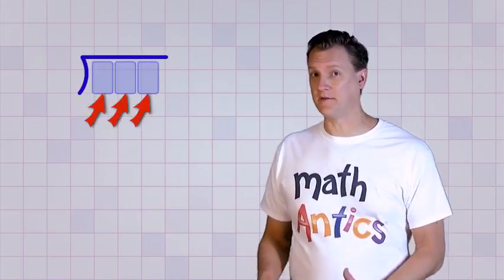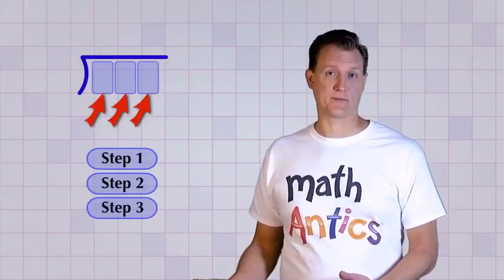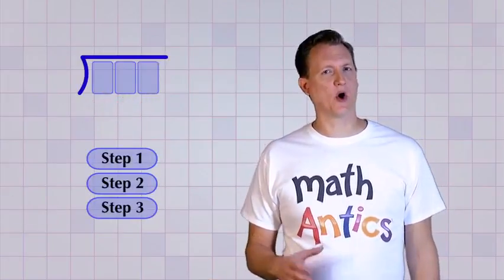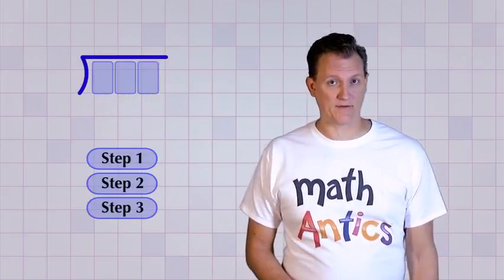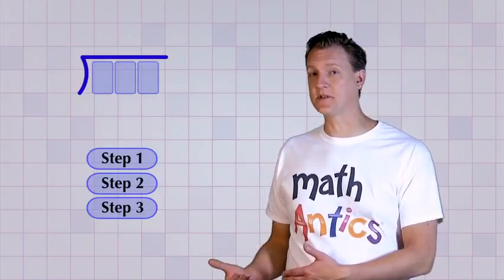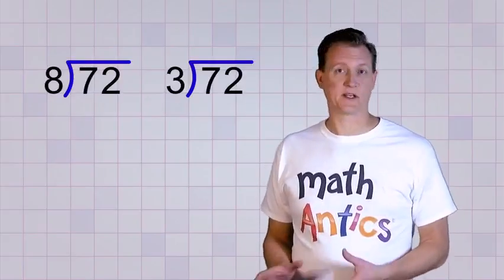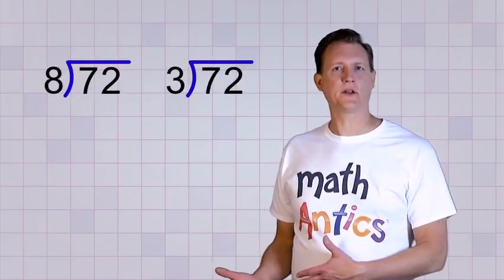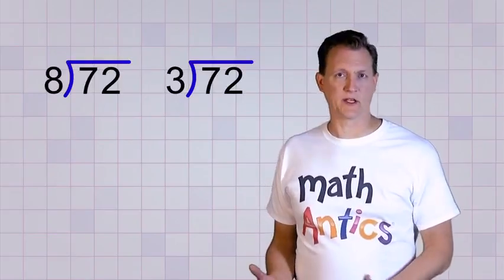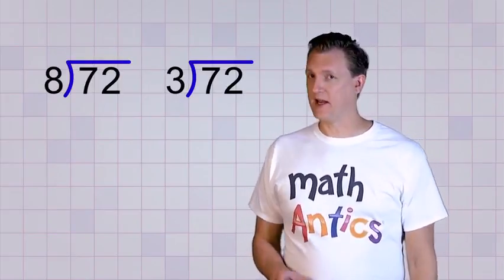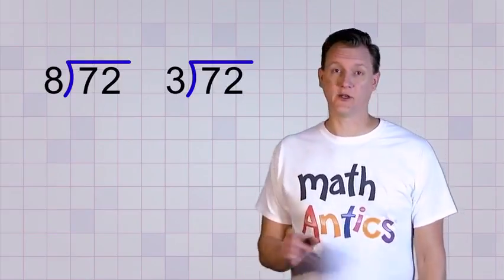Okay, so that problem had a 3 digit dividend, and it also had 3 division steps. But the number of steps isn't always the same as the number of digits we have. And that's because the number of steps also depends on how big our divisor is. To see what I mean, let's work 2 division problems side by side. These both look like the basic 1 step division problems that you did in the last video, don't they? But as you'll see, one of them is actually a 2 step problem.